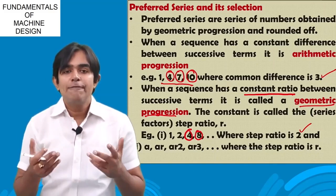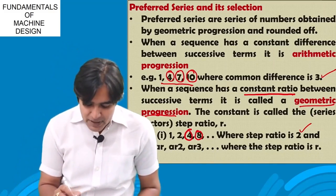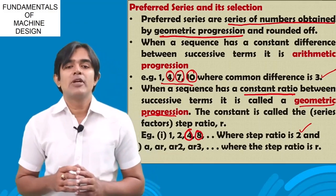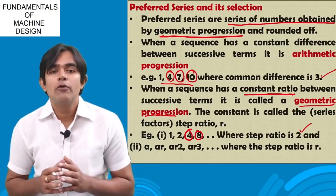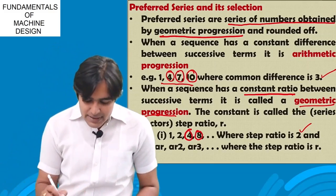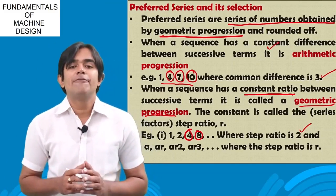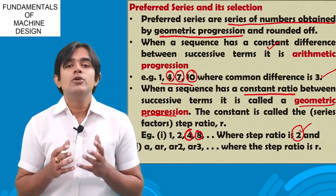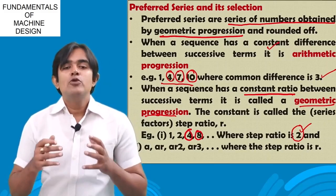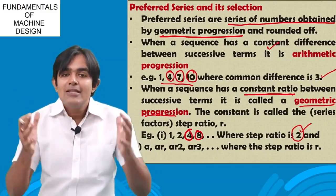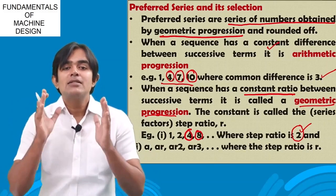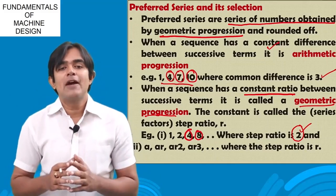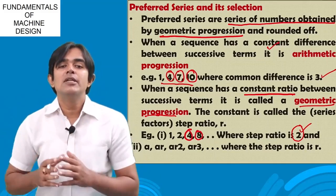The preferred series is defined as a series of numbers obtained by geometric progression that are rounded off. This sequence has a constant ratio. Using a step ratio means fewer parts will be manufactured — only standard parts that the customer uses in the market.